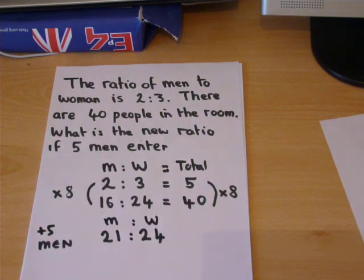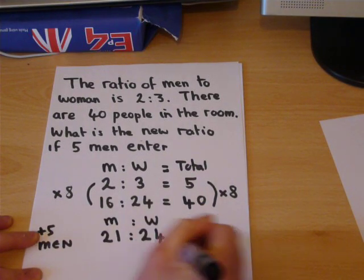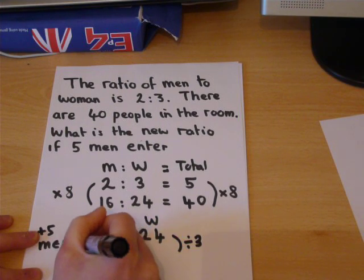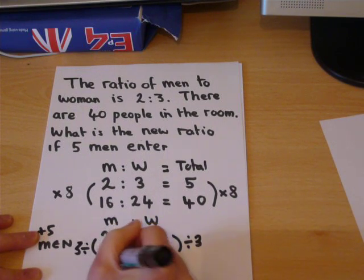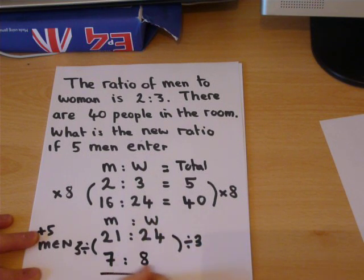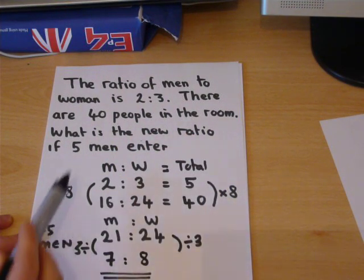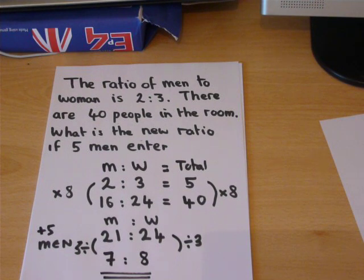However, a ratio can cancel down. If we look for a factor, we can observe how we can divide by 3. And that gives us 21 shared by 3 is 7, and 24 divided by 3 is 8. And that gives us the new ratio of men to women, with the new men having entered. In its simplest form, we have therefore solved all 3 ratio problems.